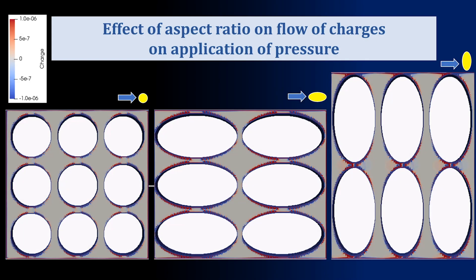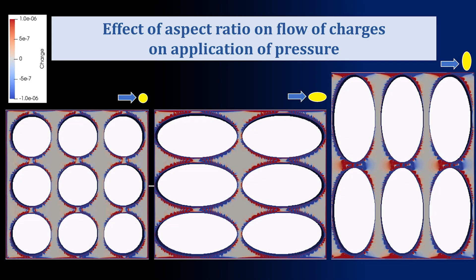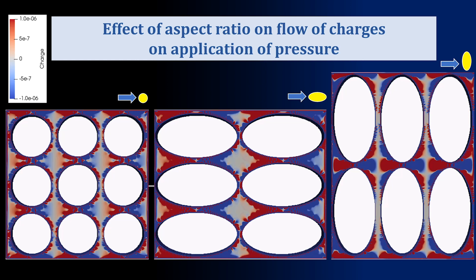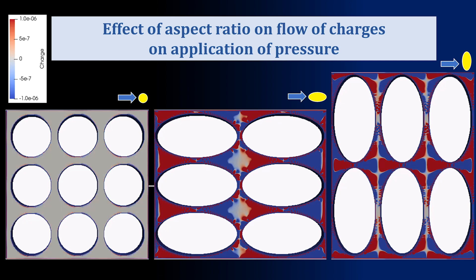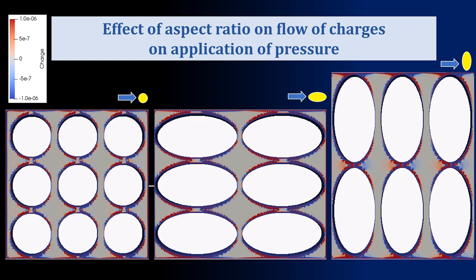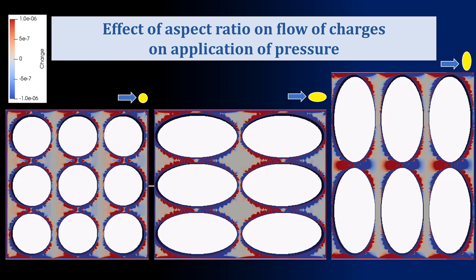We started by looking at a real CT scan of a rock — very tiny, where you can actually see the individual grains. But it turned out it was so complicated that we stopped and took a step back. We started working with just arrays of spheres, ellipses, and squares, because we thought we should understand the fundamentals of the problem before diving into a real-world application.